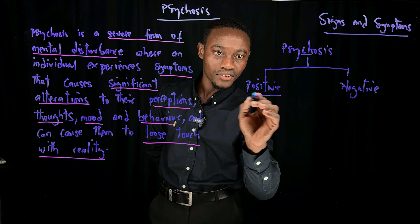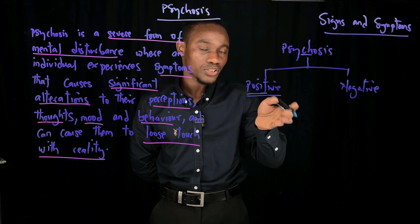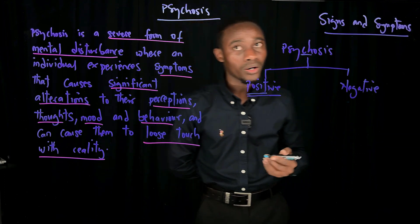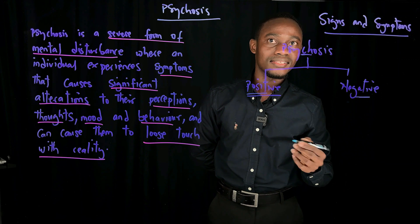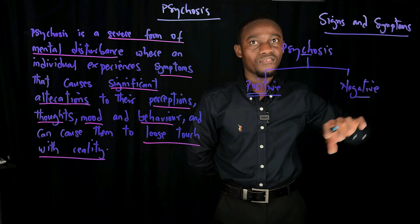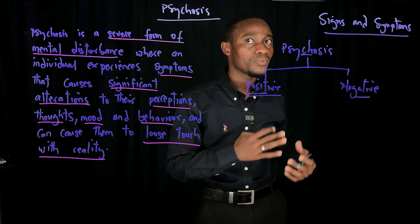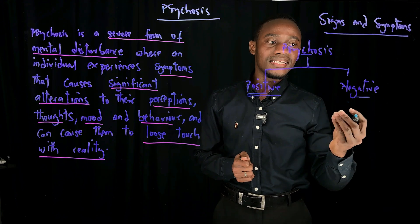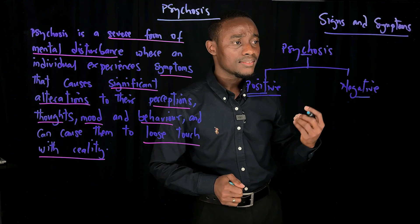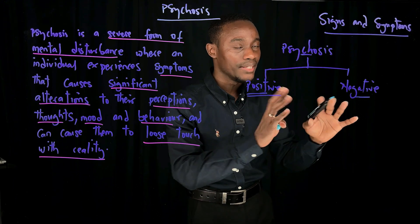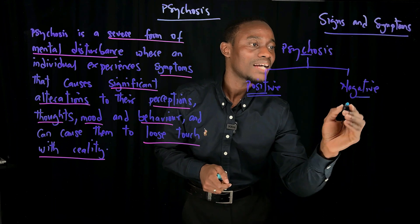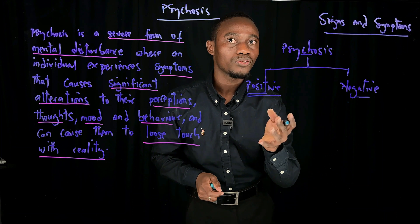You can think of the positive signs of psychosis as add-on symptoms to a person after they develop psychosis. Meanwhile, the negative signs and symptoms of psychosis are those that get subtracted from an individual after they develop psychosis — those behaviors that are present in the normal population but are absent from individuals with psychosis.